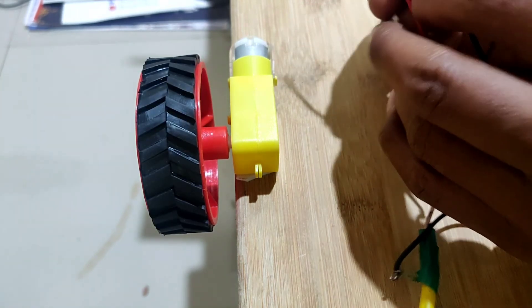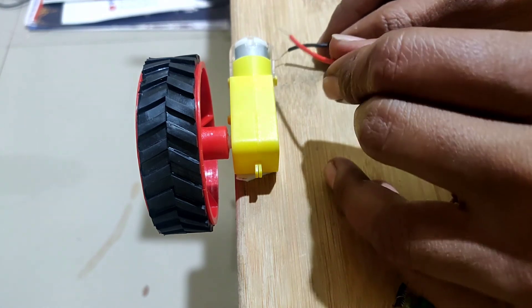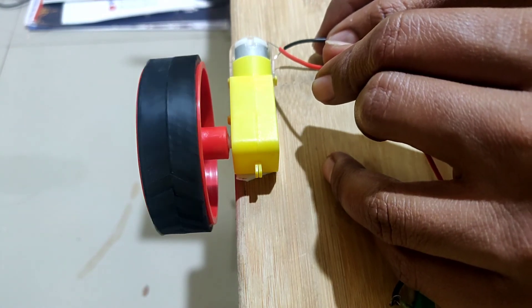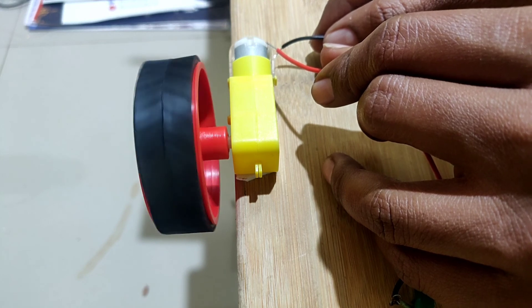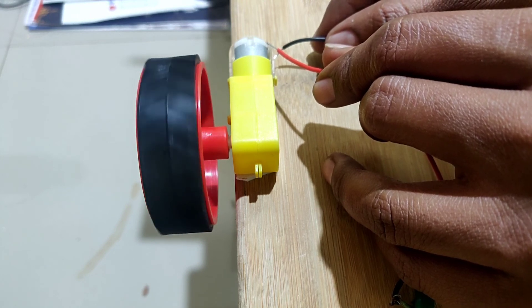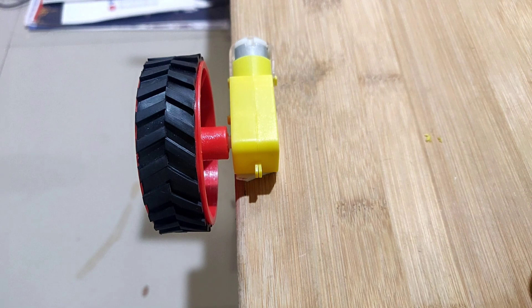If I change these wires, see here, now it is rotating in clockwise direction. So, if the motor is moving forward instead of backwards, then you need to change these wires.